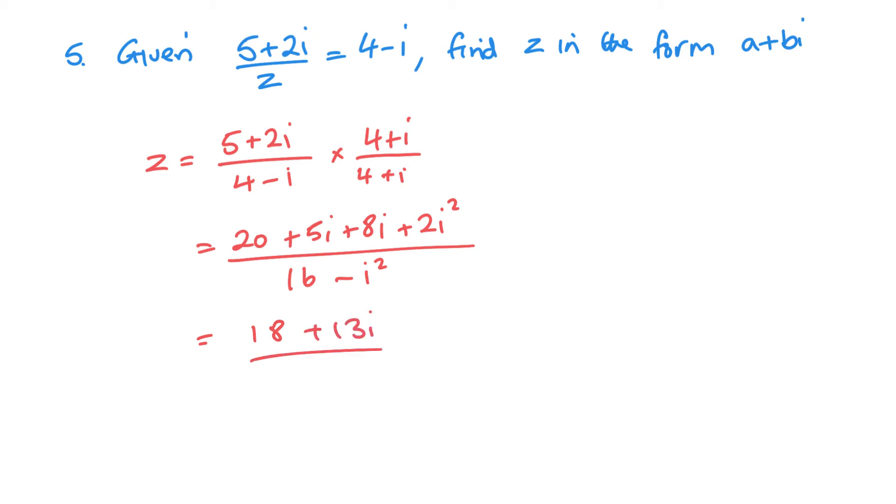And minus i squared, i squared is minus 1, so it's minus minus 1. So we got this over 17. So we get 18 over 17 plus 13 over 17i. Now that's it done. Relatively easy, just like rationalizing a surd.